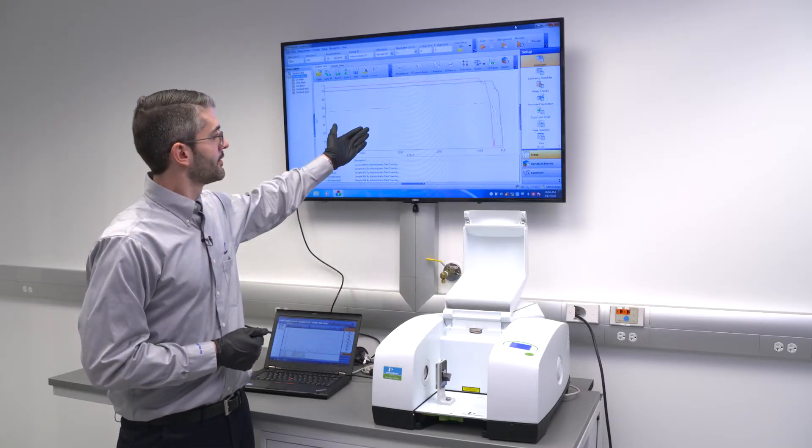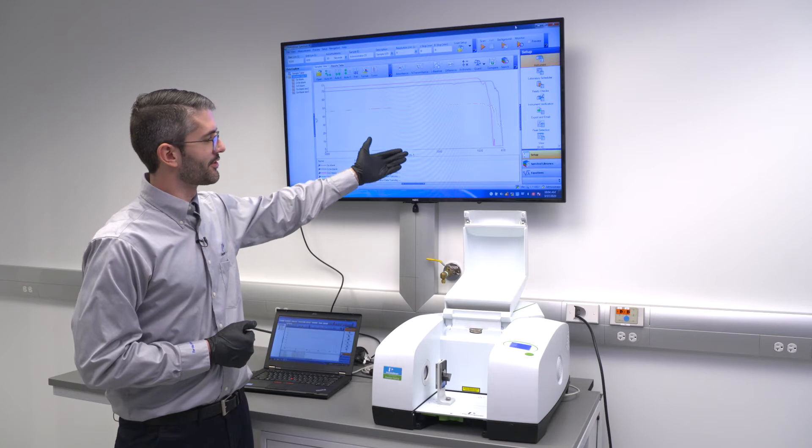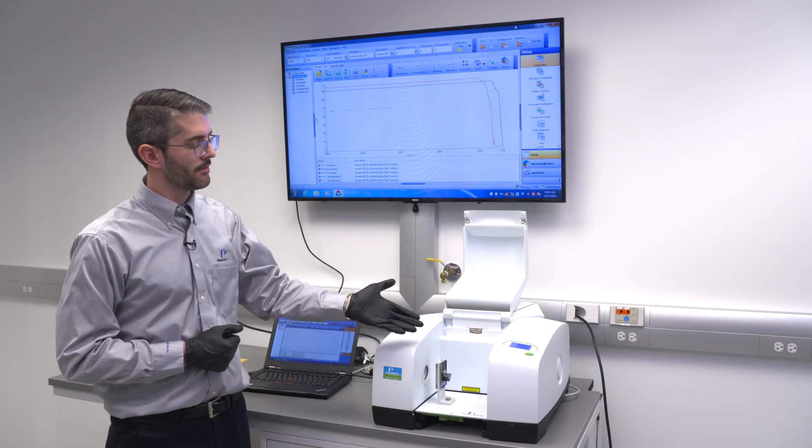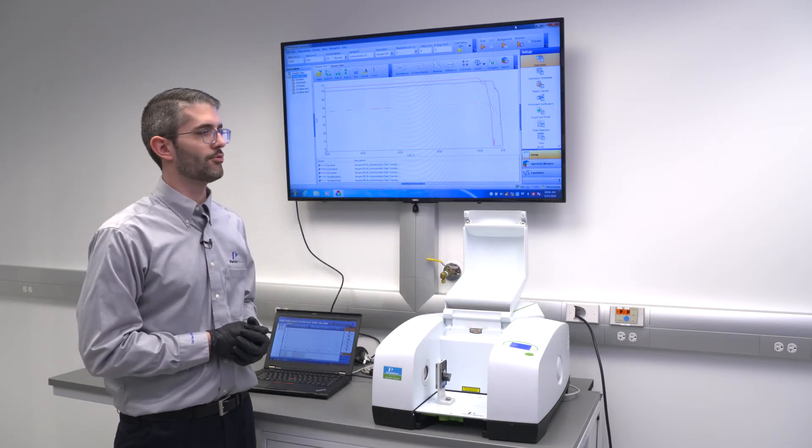Looking at the spectrum here, you'll notice we performed the measurement with the sample compartment open. This allows atmospheric water vapor and CO2 to enter the infrared beam path, which would cause the appearance of spectral features associated with those two vapors in the infrared spectrum.